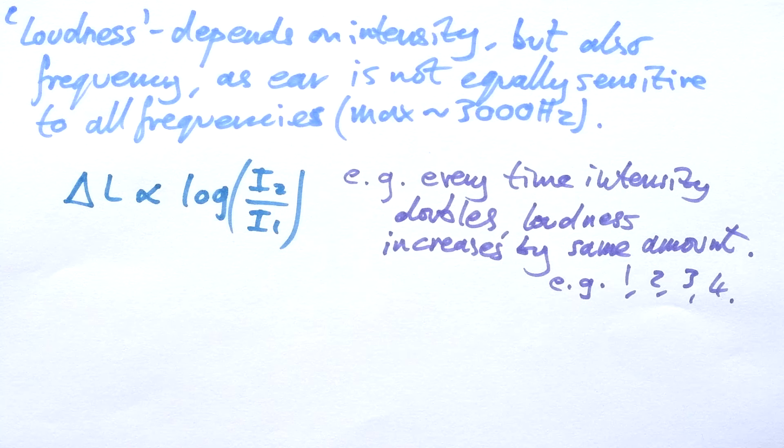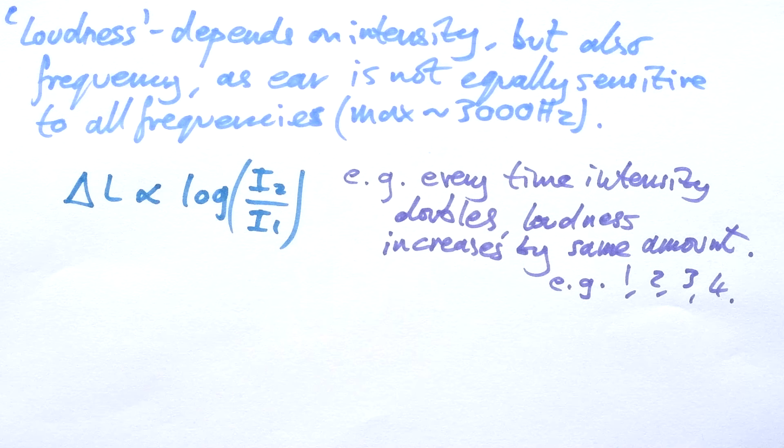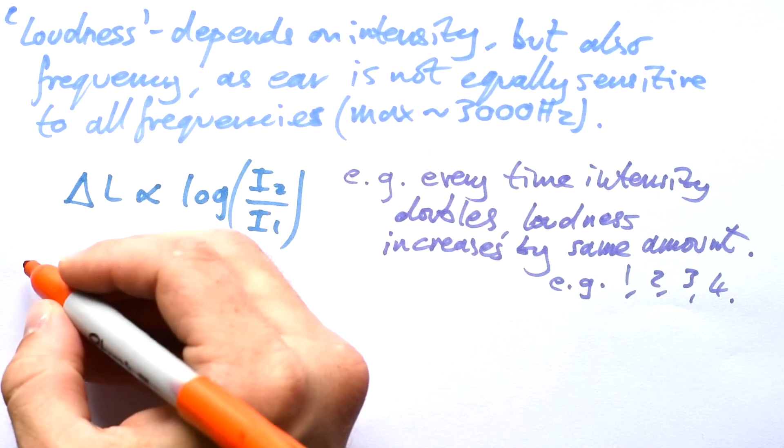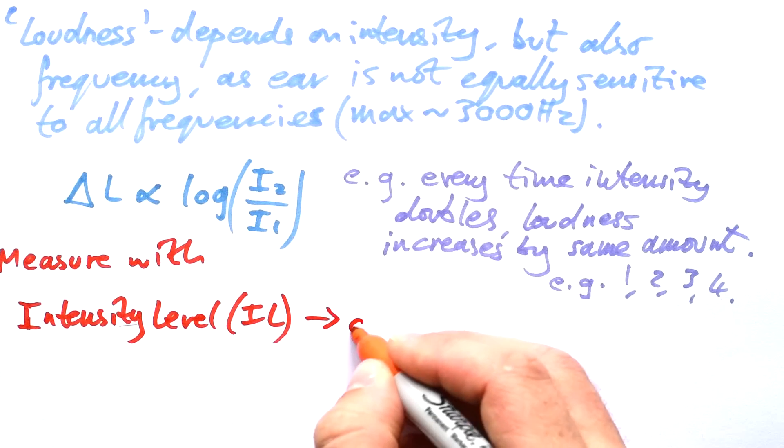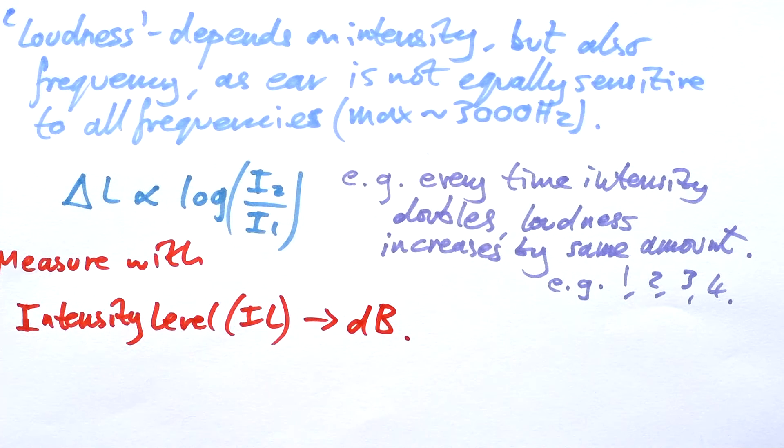So the problem is that we don't have a baseline. What does a loudness of zero mean? So that's why we measure loudness with a variable called intensity level, and that is measured in decibels. Now I know you've heard of decibels before, but you might be like I've been for most of my life and thinking I have no idea what decibels mean. What is loud in decibels? What's quiet in decibels? So what is it based off?